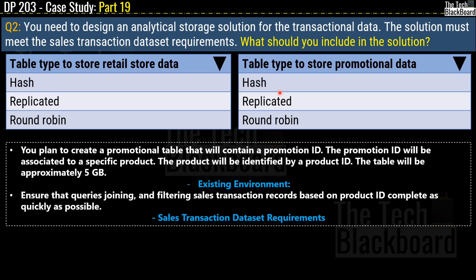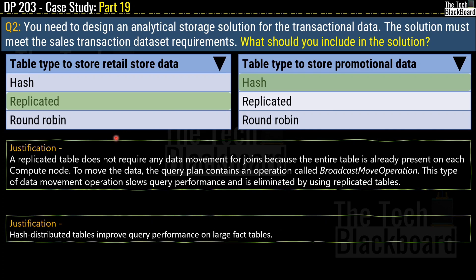A replicated table does not require any data movement for joins because the entire table is already present on each compute node. The query plan would otherwise contain a broadcast move operation, which slows query performance — eliminated by using a replicated table. A hash-distributed table improves query performance on large fact tables, and since the promotional table is approximately 5 GB, hash is chosen as the answer.